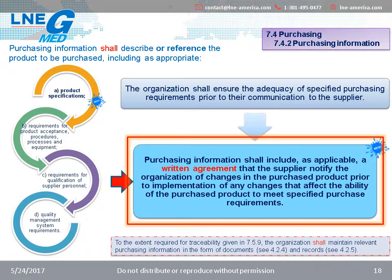If we now move to section 7.4.2, it is not specific to supplier control, but still includes some new requirements that are linked to the supplier initial control. This is where we can find the requirements related to a written agreement linked to change control. Purchasing information shall include, as applicable, a written agreement that the supplier notifies the organization of changes in the purchased product prior to implementation of any changes that affect the ability of the purchased product to meet specified purchase requirements. The format choice of this written agreement is left to the organization — some create contracts, some integrate it in purchase orders. There is no clear requirement in the standard about the format to be used.